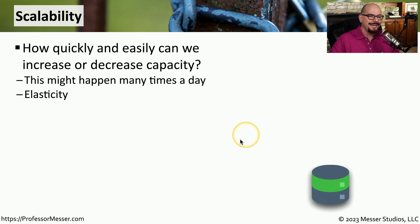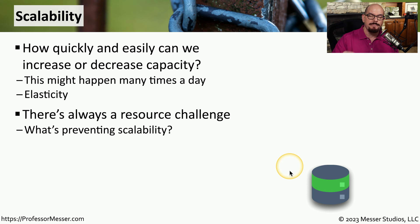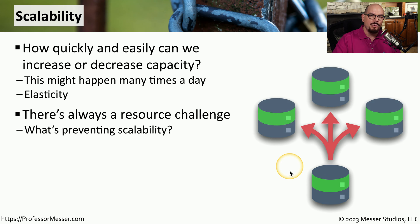We often refer to this as elasticity — describing how quickly we may be able to expand and contract the footprint of that application. You might naturally think, why wouldn't you build out the application to be the largest it could possibly be? The quick answer is that it costs money to have that type of scalability. One way organizations deal with that is to build out an application instance that matches the current load, and then as more people need to use that app, we scale it to be much larger — sometimes automatically behind the scenes, with the end user having no idea.